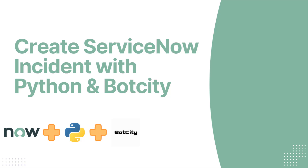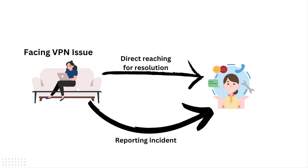In this video we'll explain how we can automate incident reporting in ServiceNow with the help of Python and Bot City. This is a very easy and quick process whenever you want to report any issues or incidents to assign to your help desk team for resolution. For example, consider you're working on your system and you're unable to connect to VPN, which is causing trouble for your projects.